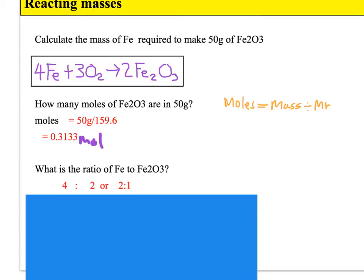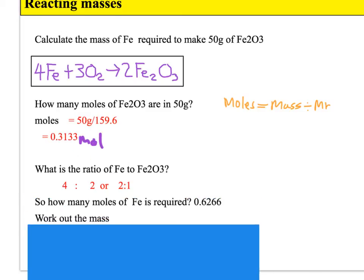Now, what's the ratio of iron to iron oxide? Well, we've got two iron oxides to every four irons, and we're asked to work out the mass of iron. The ratio is 2 to 4, which is the same as 1 to 2. So it means that for every one iron oxide that is produced, I need two irons to make it. So if I made 0.3133 moles of iron oxide, how much iron did I need to make that? Well, I needed - divide by 1, times by 2 - so that comes out as 0.6266 moles.